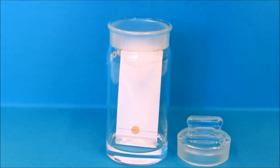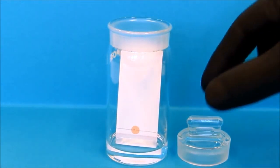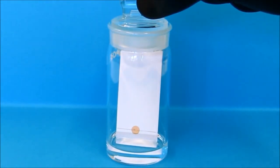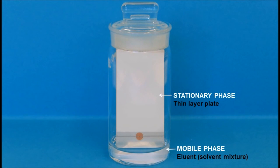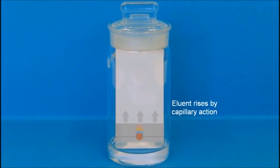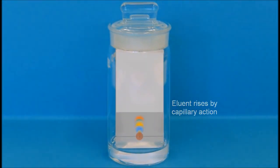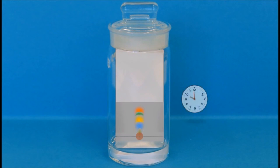Then put the plate in a jar containing the mobile phase. The mobile phase is moving upward through the stationary phase particles due to capillary action in the tiny spaces between the particles of the stationary phase.